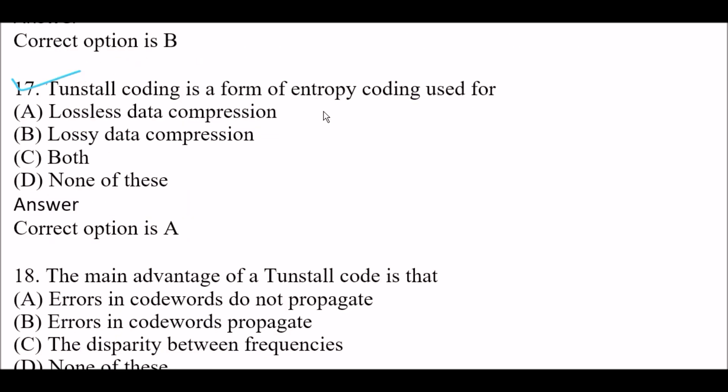Next question: Tunstall coding is a form of entropy coding used for — Option A: lossless data compression. Option B: lossy data compression. Option C: both. Option D: none of these. The right answer is Option A, lossless data compression. Tunstall coding is a form of entropy coding used for lossless data compression.